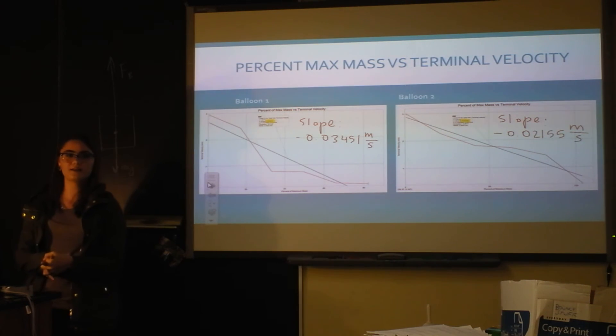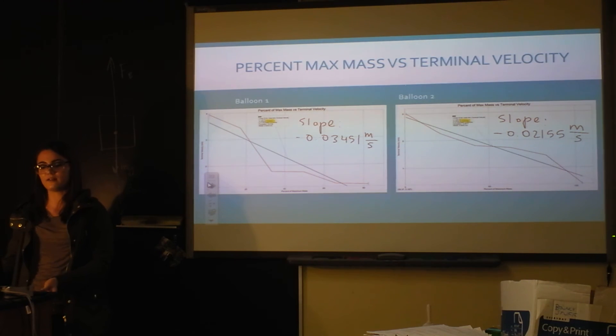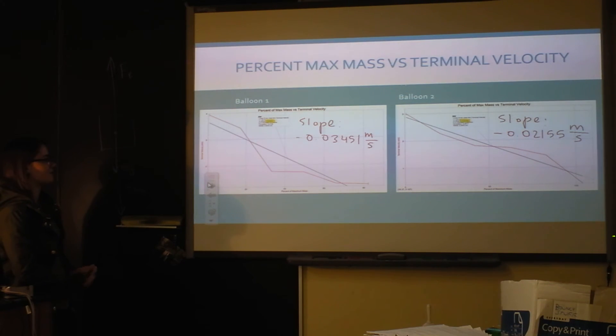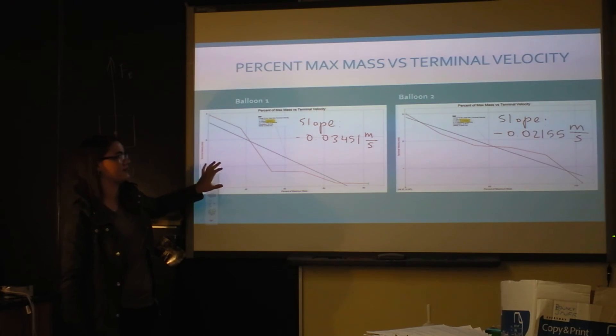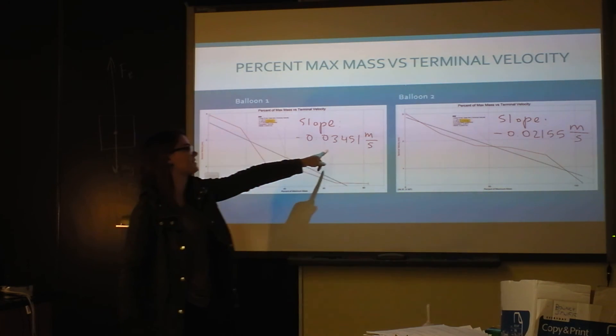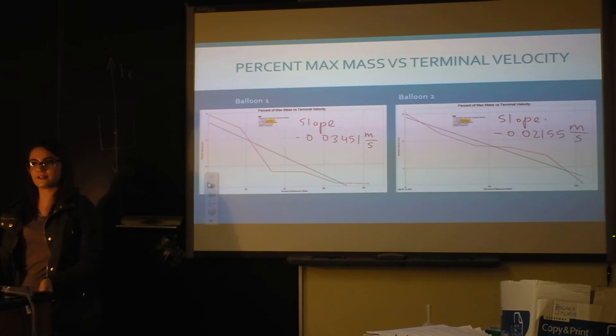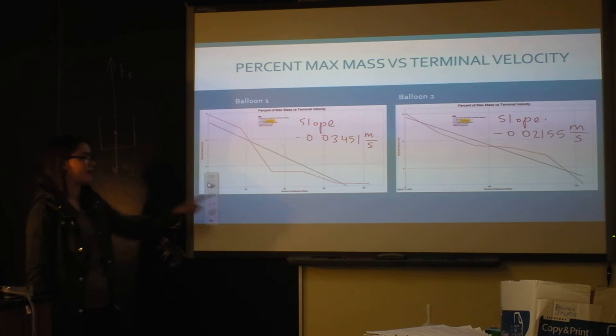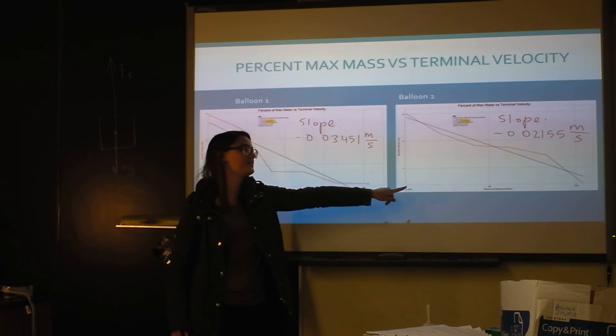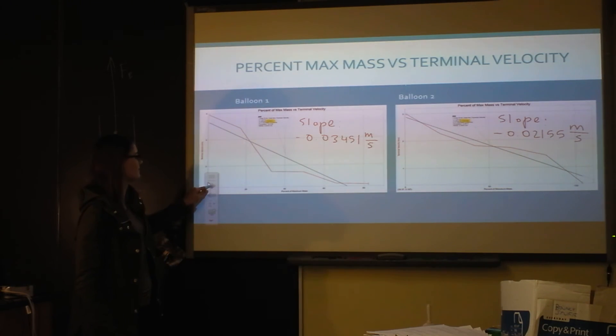Then I graphed the percent of the maximum mass because each of the balloon has a different maximum mass it can carry because they had different amounts of helium in them. Based on the density of helium, for every gram that you add, there is a volume of helium that can carry that amount of mass. I graphed the percent of maximum mass because those two things are comparable between whichever balloon you use. Then I graphed that with the terminal velocity. This is the first balloon which had more helium in it than balloon two, so the slope was steeper. The terminal velocity decreases by about this much per percent of maximum mass that you add, which makes sense because one percent of the maximum mass of this balloon is going to be a lot more than the one percent of this maximum mass.